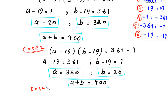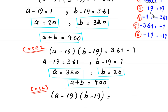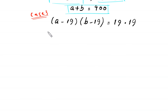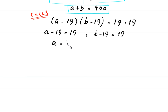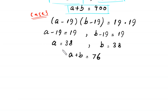Now we solve case 3. We write (a minus 19) times (b minus 19) equal to 19 times 19. So a minus 19 equals 19 and b minus 19 equals 19. From the first equation we get a equals 38, and from the second we get b equals 38. So a plus b equals 76.